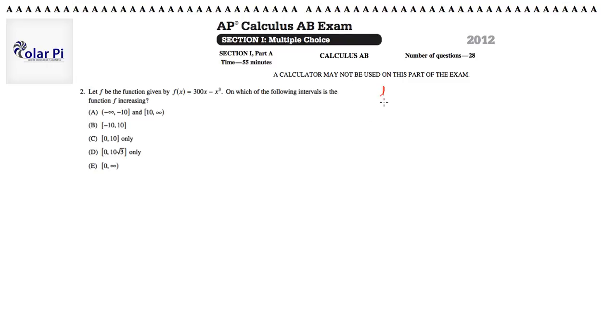Now, we know that f increasing is synonymous with f prime greater than zero. So if we could figure out f prime, then we could just determine where f prime is greater than zero, and we're done. Because where f prime is greater than zero is where f is increasing, because f prime is telling us the slope of f.